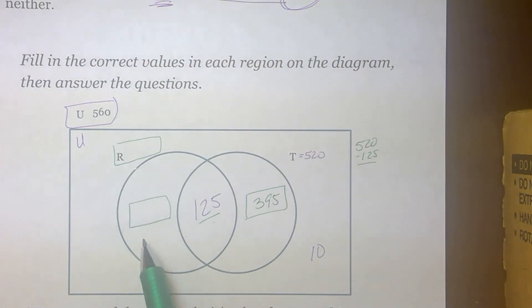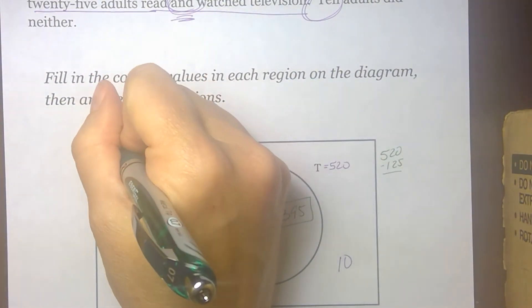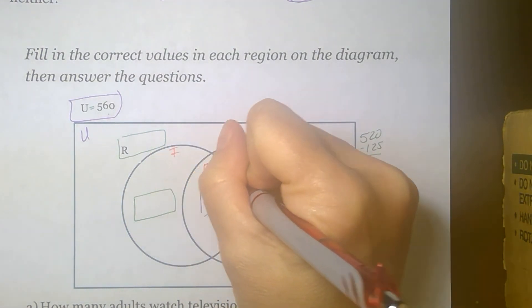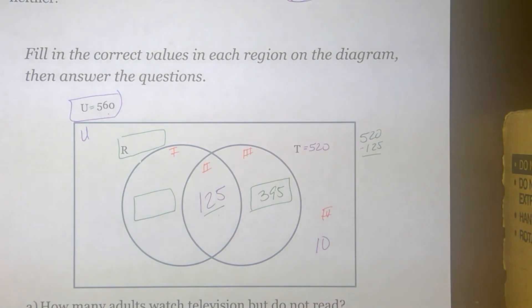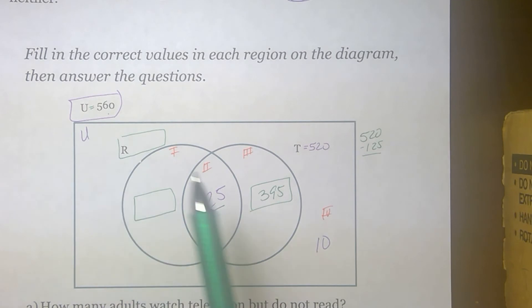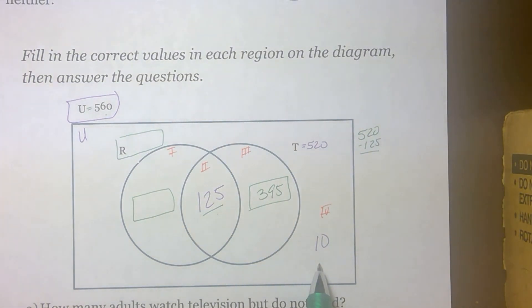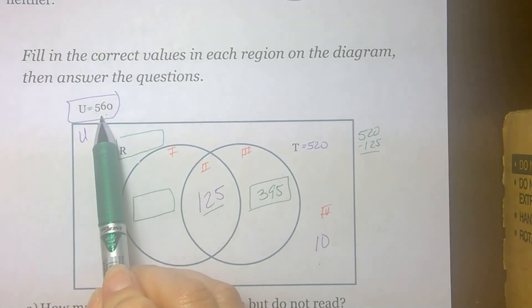We still have two blanks open. I know that the total number of people surveyed was 560. How many people do I have represented? Because I've got four regions. I have region 1, 2, 3, and 4. And the total of those four regions should be 560. So if I've got 395 and 125 here, the sum of those is that 520. And I've got another 10 out here. So that's 530 people out of the 560 people surveyed. So 560 minus that 530 that's already shown means there are 30 people who said they just read, they don't watch TV.